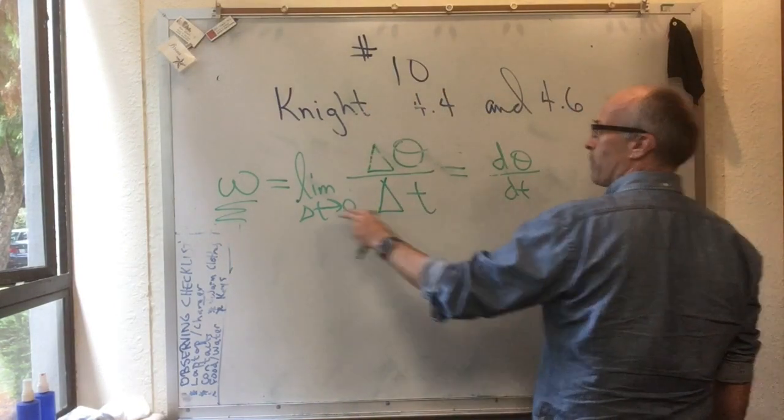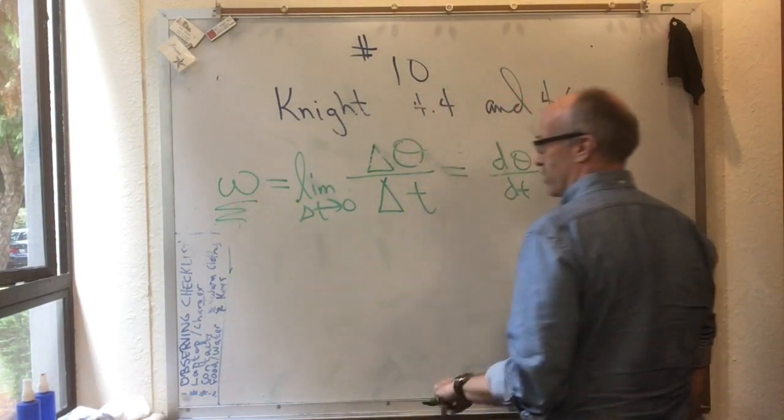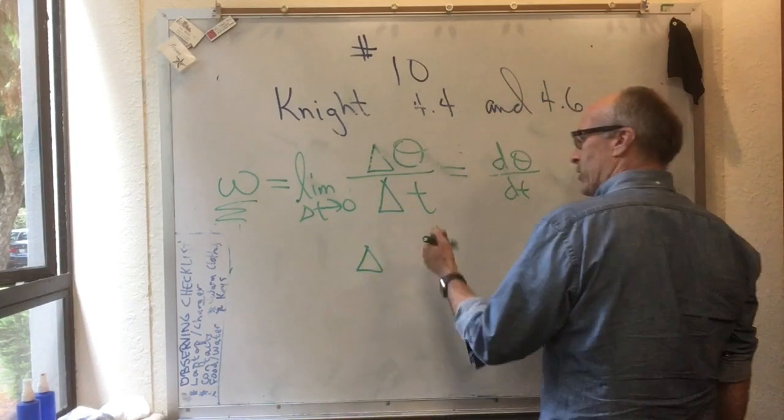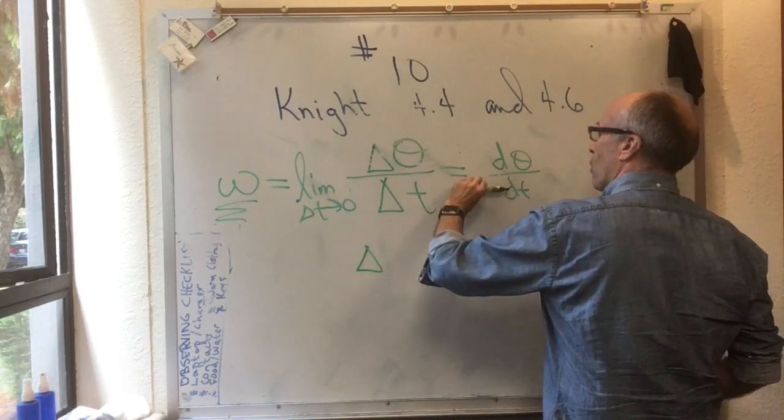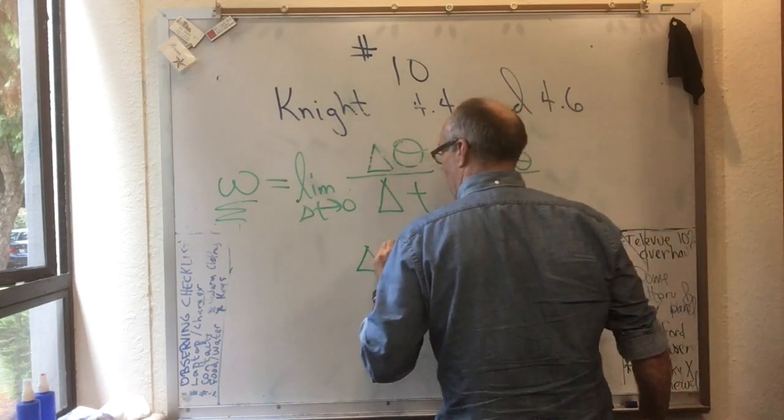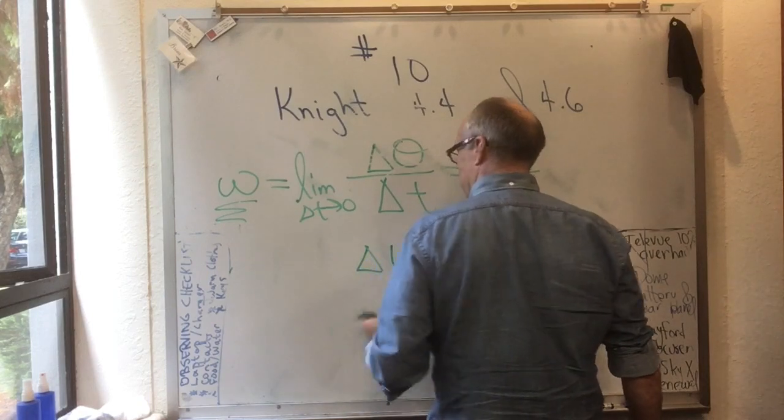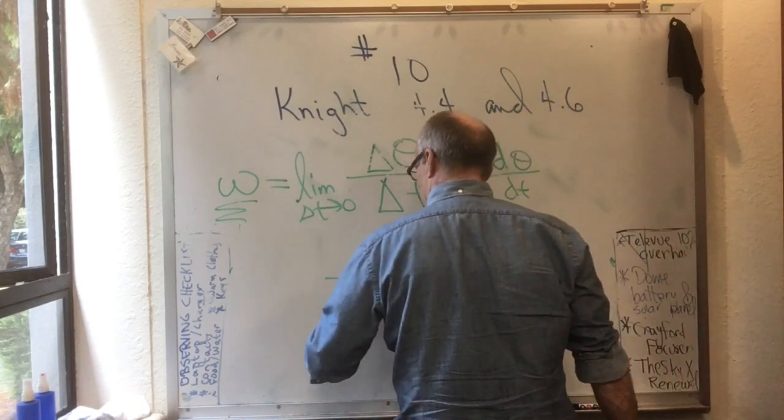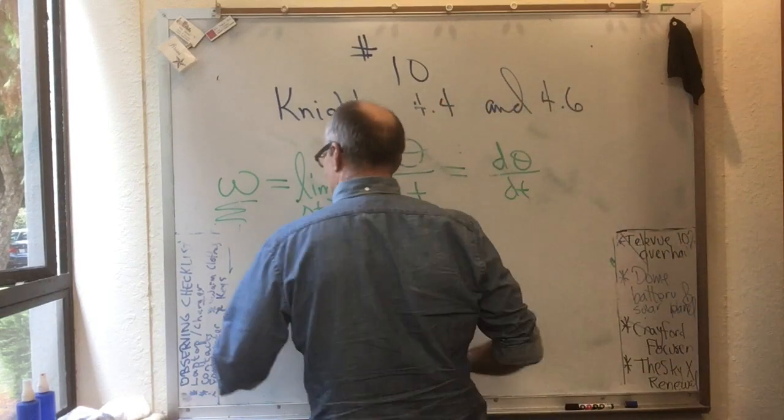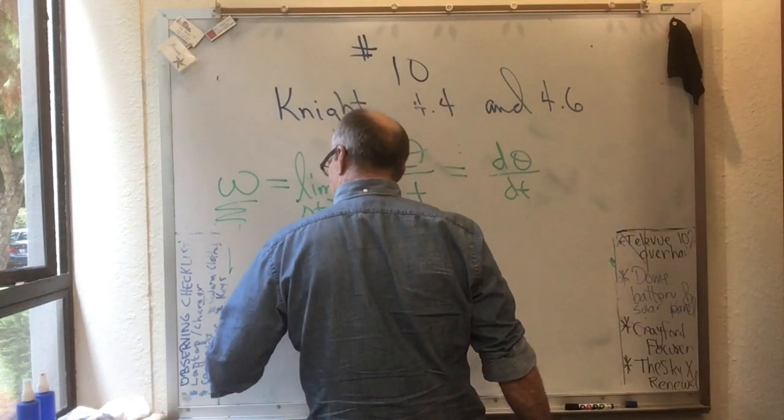That would represent the omega itself, not just the angle, but omega itself changing. So we can define that. We can ask, how much does the angular velocity change over some amount of time? So that would be delta omega in some delta t, and we can call that the angular acceleration.